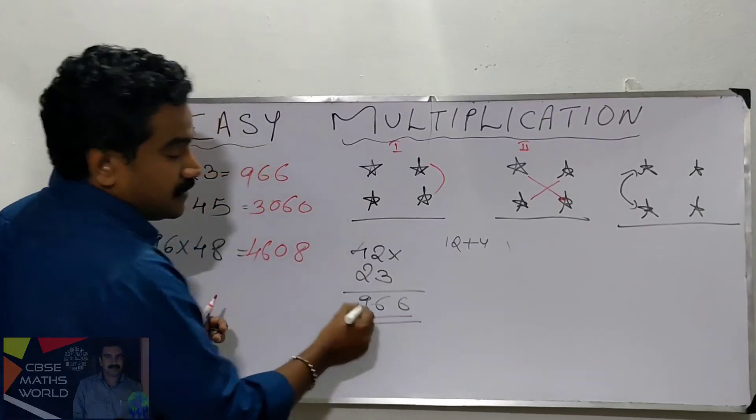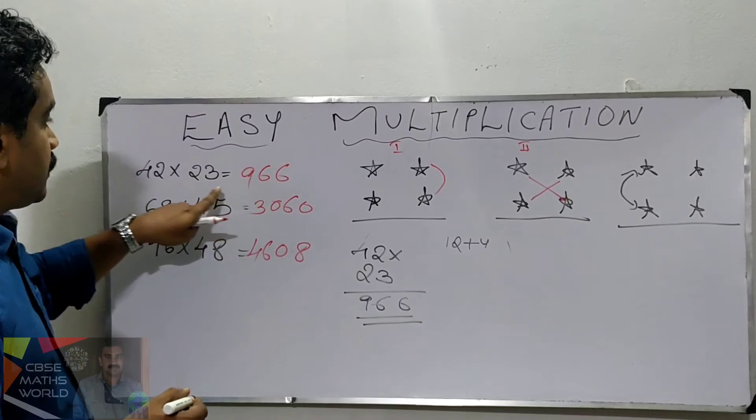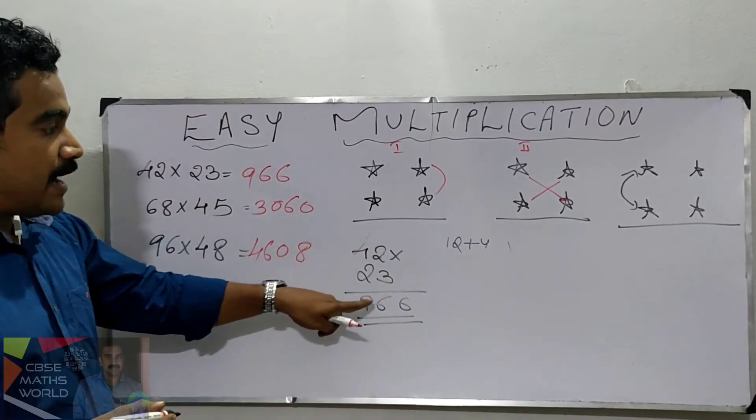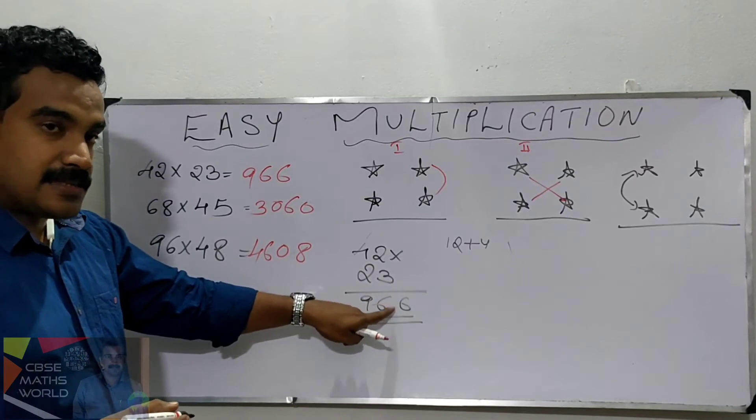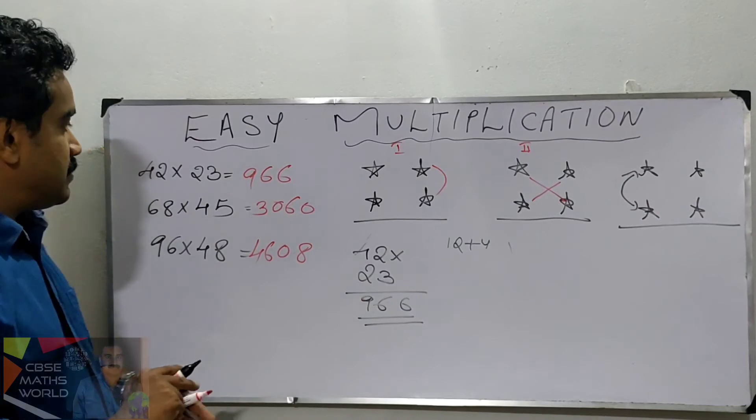Then the last technique: these two, 4 into 2 is 8. 8 plus this 1, that is 9. So the answer is 966. First 2 into 3 is 6, then cross multiplication 3 into 4 and 2 into 2, then add. You will get 16. Write 6 here and carry 1. Then 4 into 2 is 8, 8 plus 1 is 9.